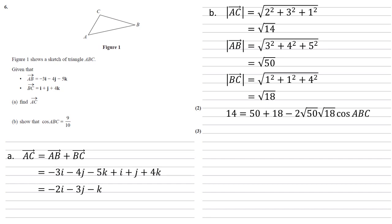The length of AC squared is 14. That's equal to the sum of the squares of the other two sides minus 2 times the product of the lengths of AB times BC times cos ABC. Rearranging this, we get that cos ABC is equal to 54 over 2 root 50 root 18, which is equal to 9 tenths as required.